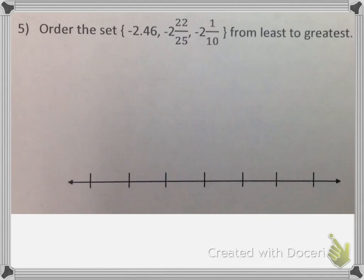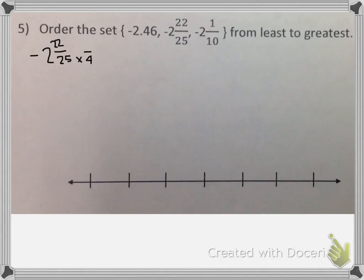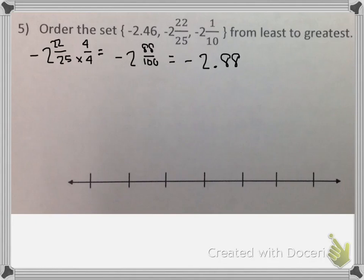Order the set negative 2 and forty-six-hundredths, negative 2 and twenty-two twenty-fifths, and negative 2 and one-tenth from least to greatest. I have one decimal and two fractions, but those two fractions I can easily convert to decimals. For negative 2 and twenty-two twenty-fifths, I can see that if I multiply my numerator and denominator by 4, I will get an equivalent fraction with a denominator of 100, giving me 2 and eighty-eight-hundredths. To write that as a decimal, I write the 2 in front of the decimal and put 88 with the last 8 ending in the hundredths place. And remember, it's a negative number.